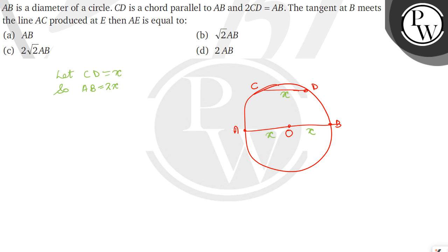Now from the question we can say that the tangent at B meets the line AC at E. So there must be a tangent at B. Suppose this is the tangent at B which meets AC at E. So suppose this is the point E which meets AC at E.